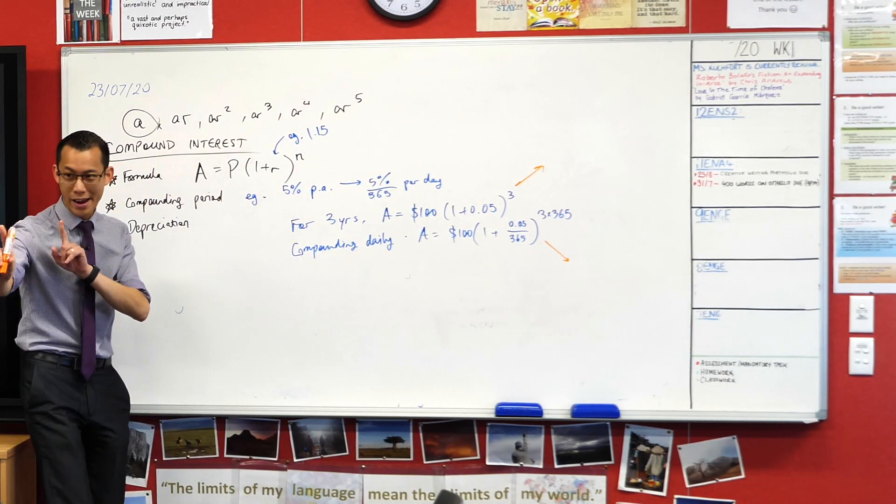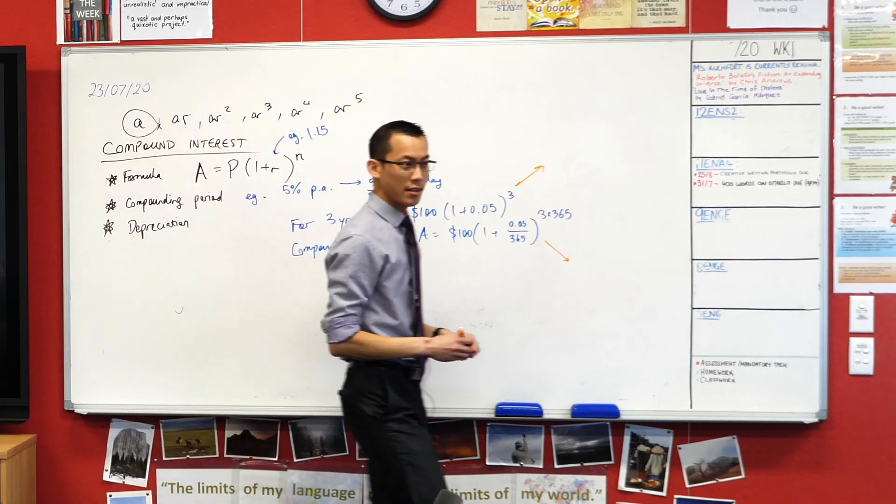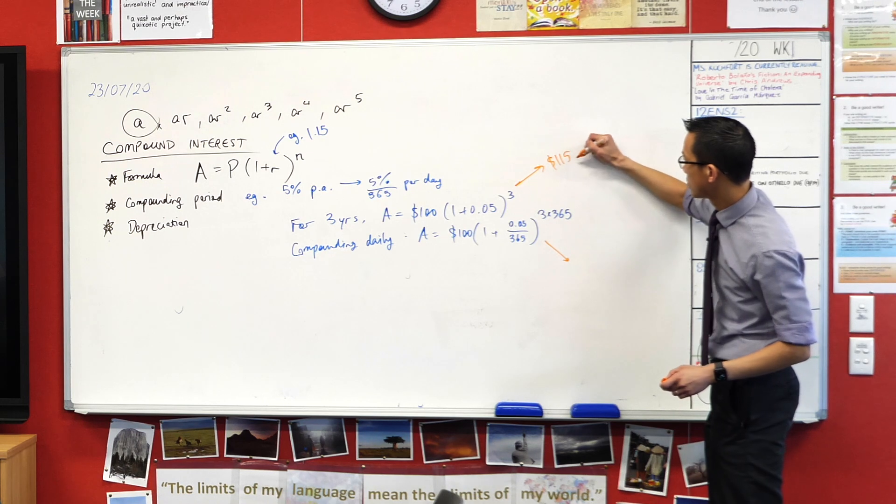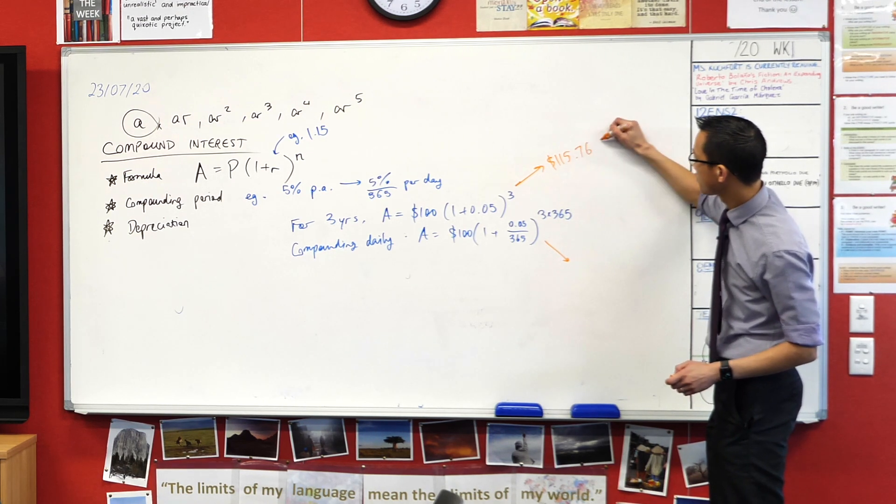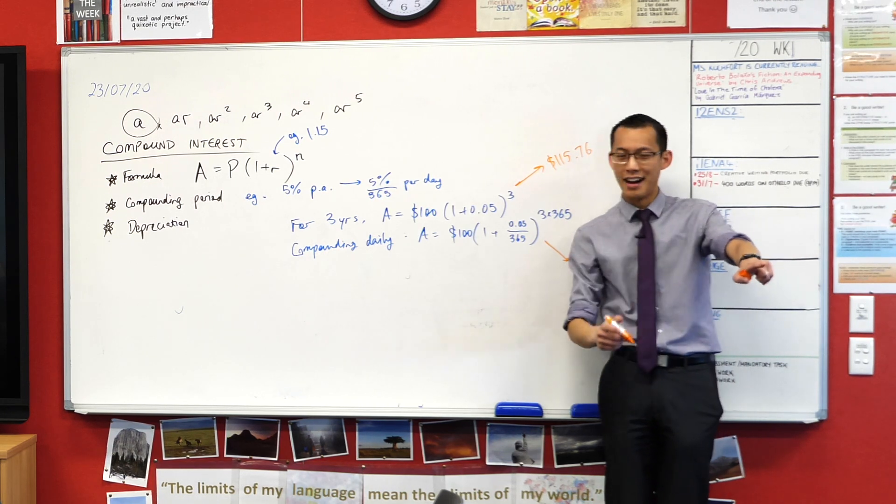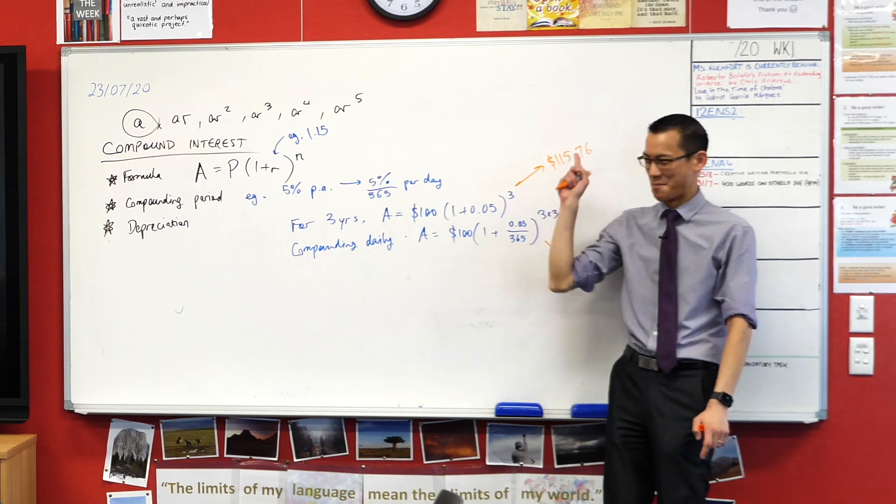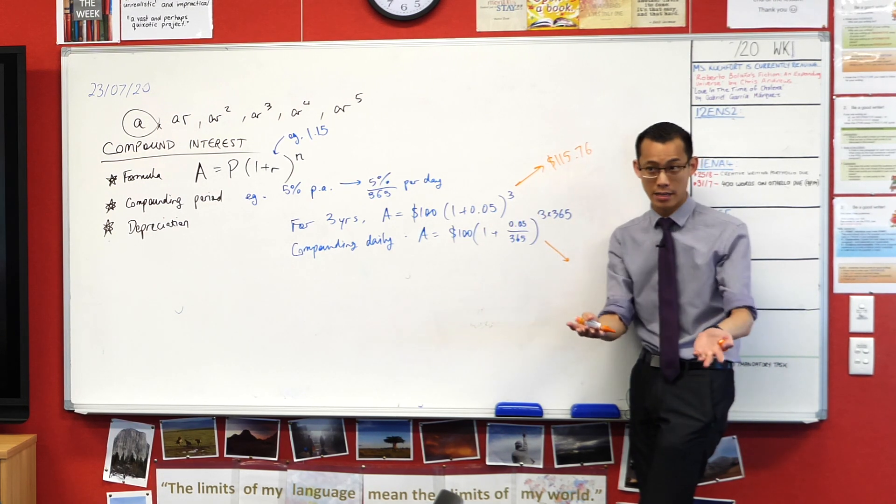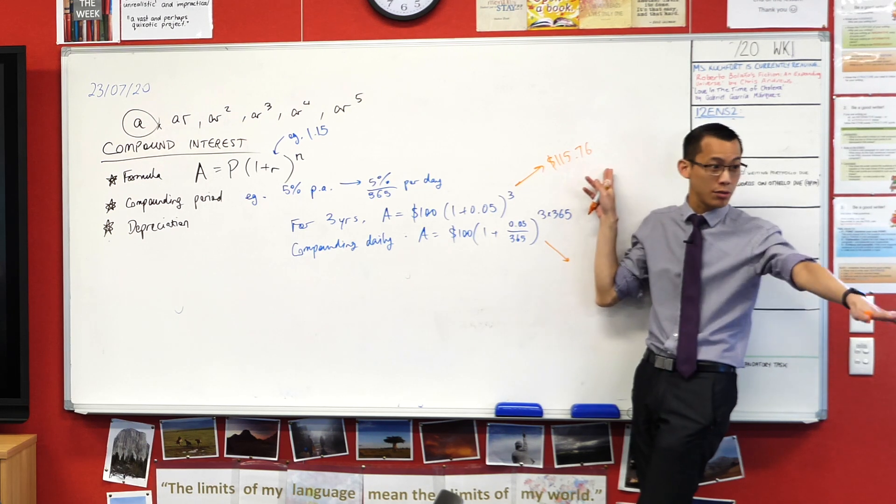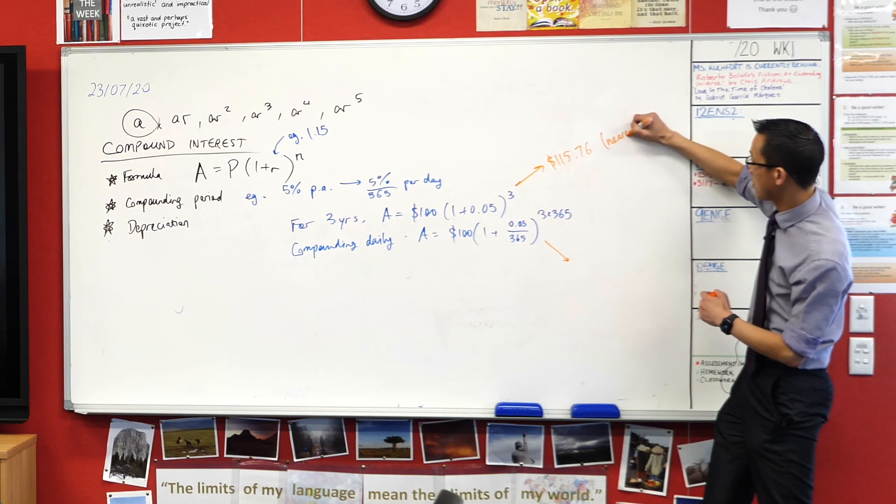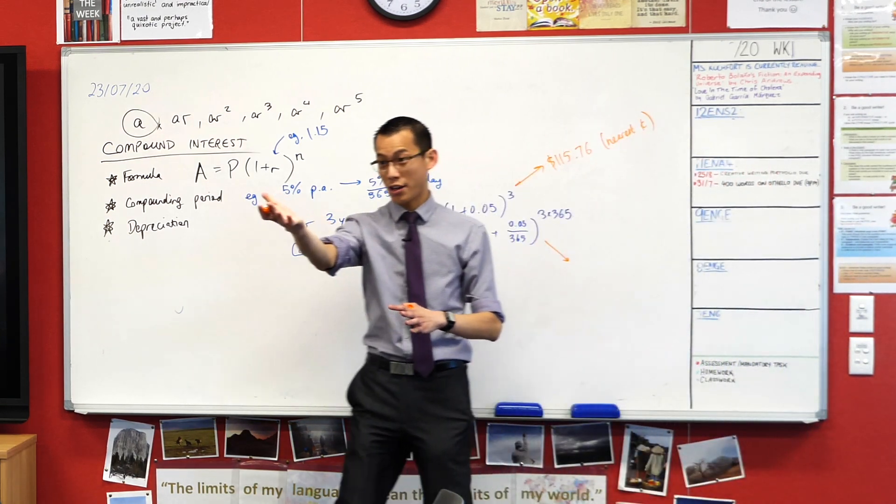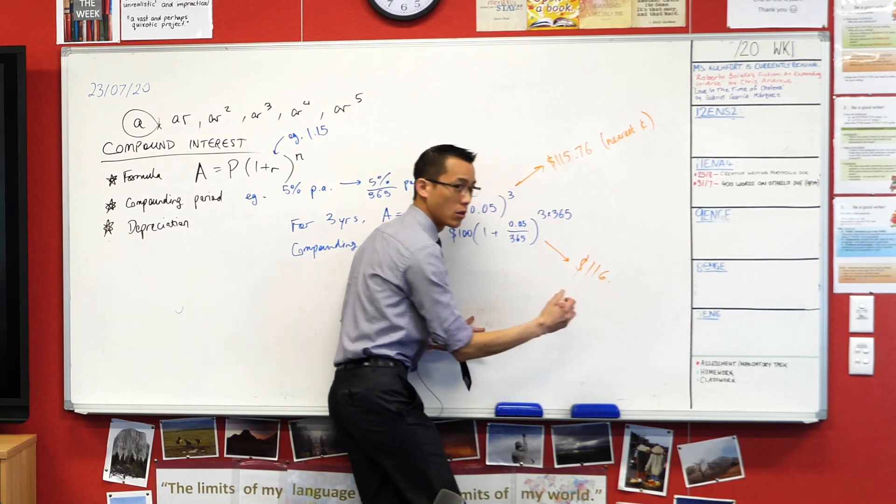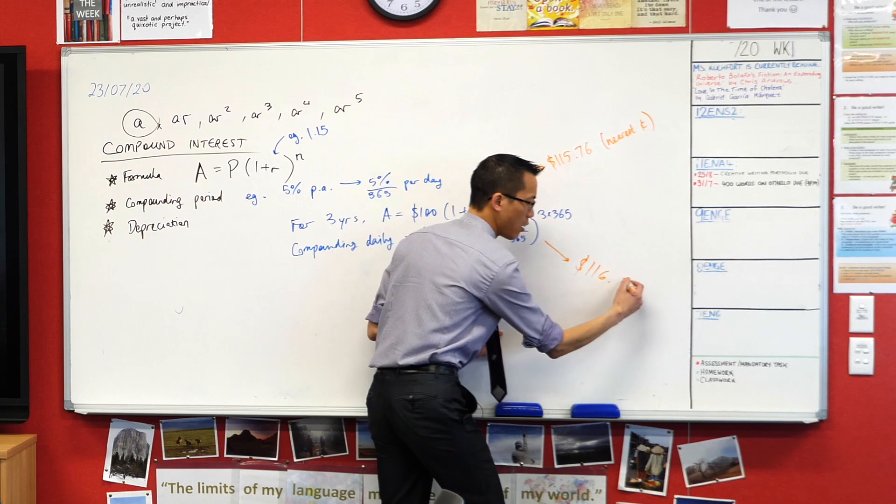The amount of interest you get each time is so much tinier, but you do it more frequently. Can you calculate these out? One of you work out the yearly value and the person next to you work out the daily one. The yearly one first? $115.76.